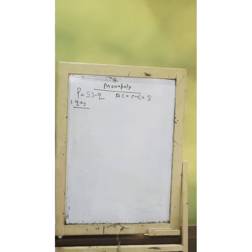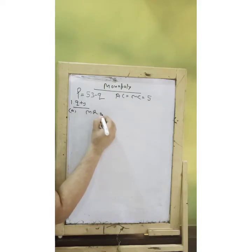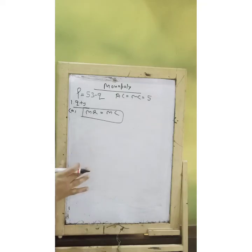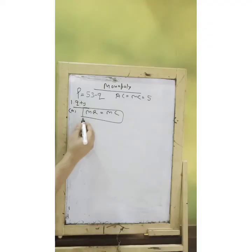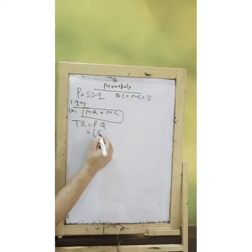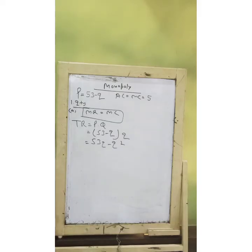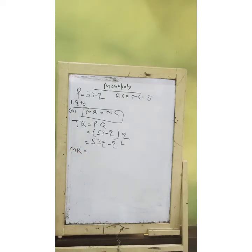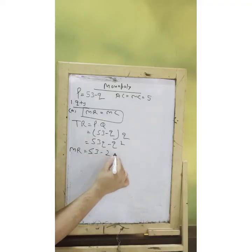I will be teaching you two ways to solve this equilibrium quantity. First, we can use the MR equal to MC approach, because MR equal to MC implies profit-maximizing quantity. In order to get MR, I am first going to solve TR which is P into Q. Going by the function at hand, TR is 53Q minus Q squared. MR is the first derivative of TR, so differentiating TR with respect to Q gives us MR, which is 53 minus 2Q.